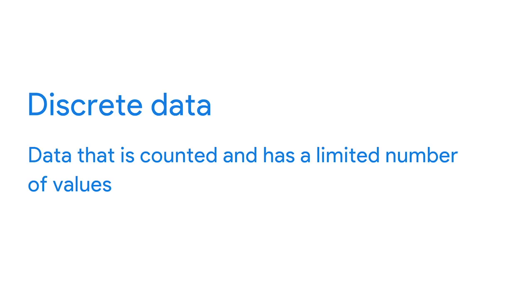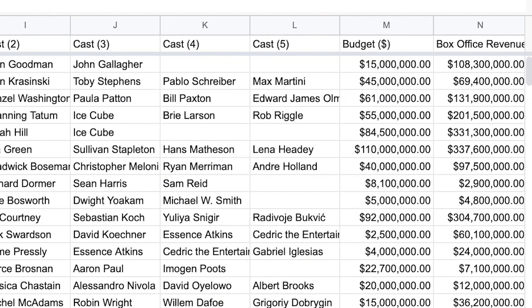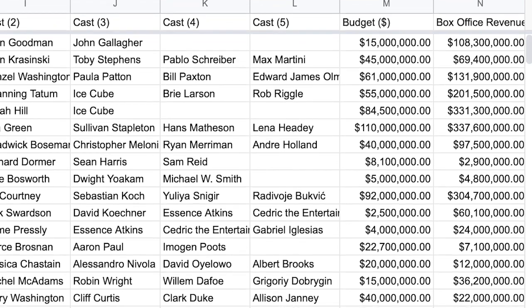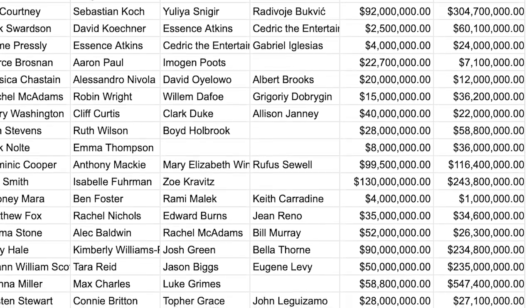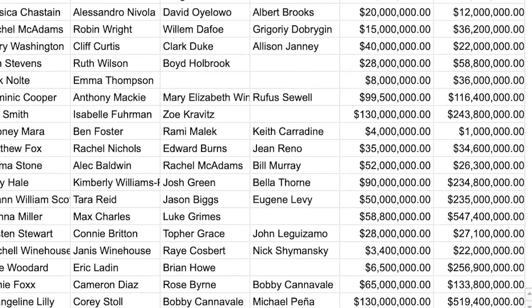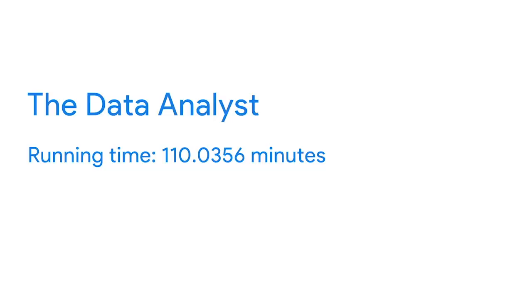We can go even deeper into quantitative data and break it down into discrete or continuous data. Discrete data is data that's counted and has a limited number of values. In our spreadsheet, each movie's budget and box office returns are both examples of discrete data — they can be counted and have a limited number of values. For example, the amount of money a movie makes can only be represented with exactly two digits after the decimal to represent cents. Continuous data, on the other hand, can be measured using a timer and its value can be shown as a decimal with several places. You could express a movie's runtime as 110.0356 minutes, and even add fractional data after the decimal point if needed.